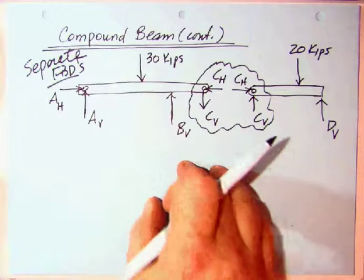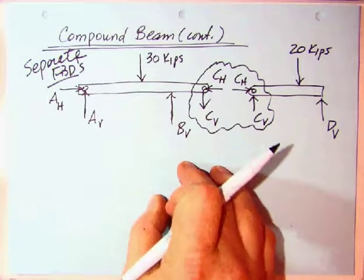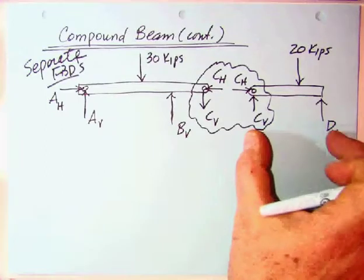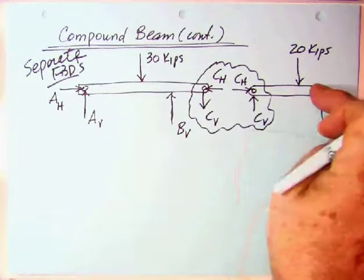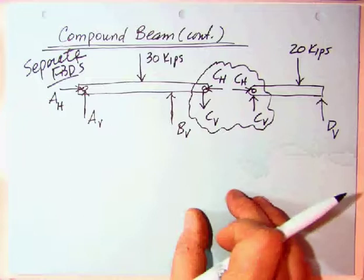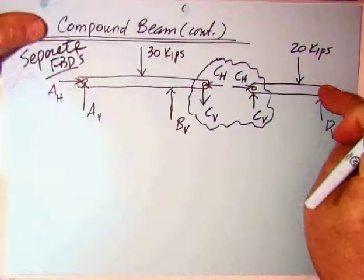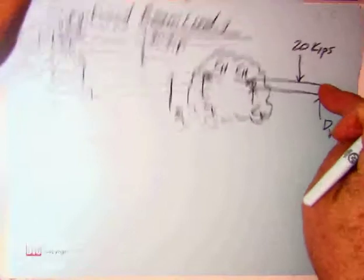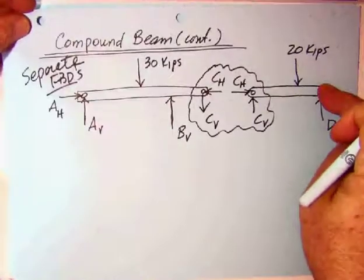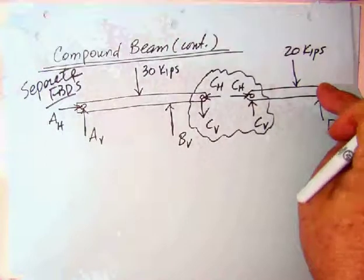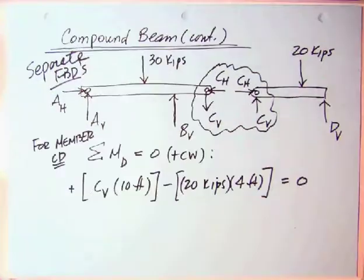and we'll find out whether it's positive or negative, although I think the direction we've shown here is going to be positive. But again, I didn't do that. I just did it positive on the right piece, negative on the left piece. Okay, well, okay, so for member CD, we're going to take moments at D and get CV,